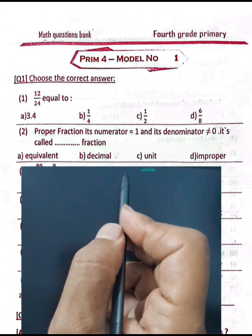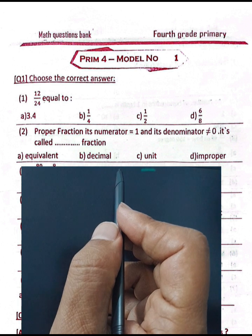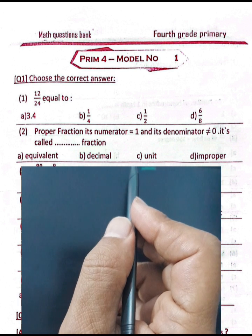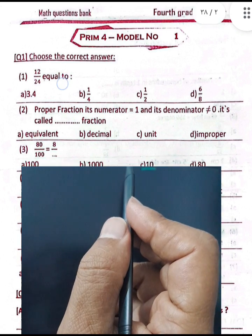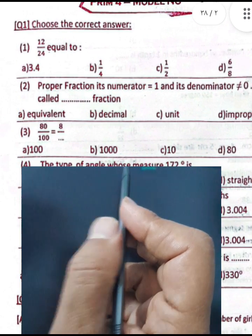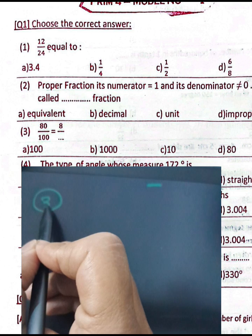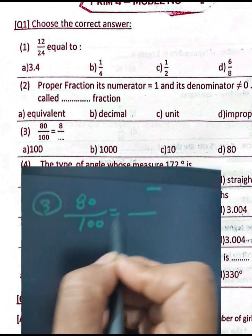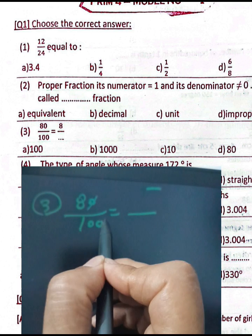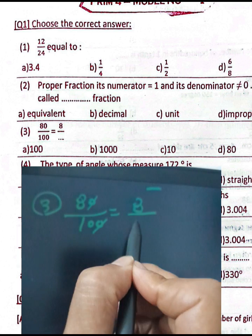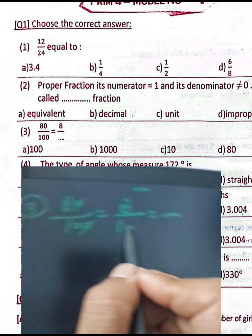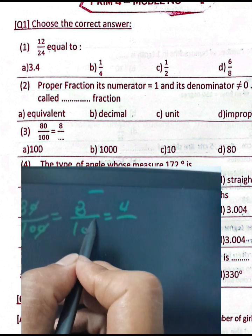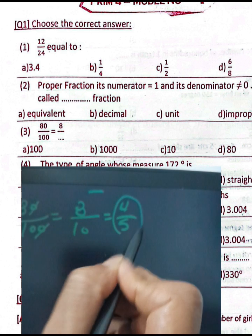Unit fraction is a proper fraction whose numerator equals one and is a number not equal to zero. Question number three: we have 80 over 100. You can simplify it by dividing numerator and denominator by 10, giving 8 over 10, then divide by 2: 8 divided by 2 equals 4, and 10 divided by 2 equals 5, so the result is 4 over 5 in simplest form.